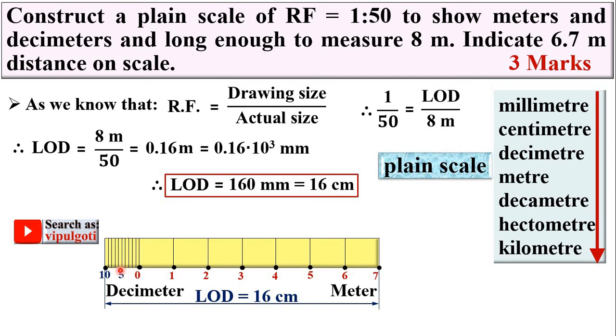This is 5 decimeters, then 6, and then 7. I can draw from here to here, 6 meters and 7 decimeters. This distance represents 6.7 meters. You can say this distance is 6 meters and 7 decimeters.